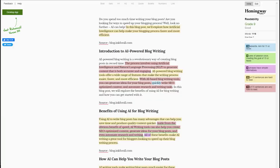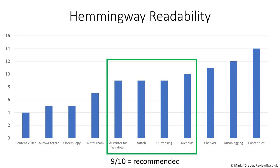The first tool being the Hemingway app, which gives you a readability score and you want to aim for grade 9 or 10. A higher number like 14 or 15 would tend to indicate the content could be confusing and tedious for the reader.